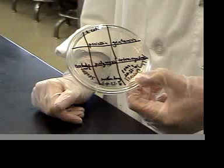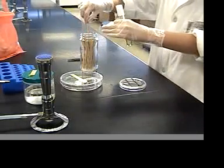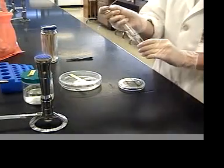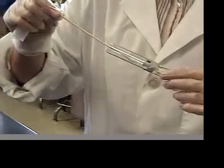The Kirby-Bauer technique allows us to determine the sensitivity of different bacterial strains to different antibiotics. First, in order to do this assay, you'll need to confluently inoculate an agar plate. A special agar is used called Mueller-Hinton agar.